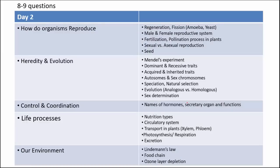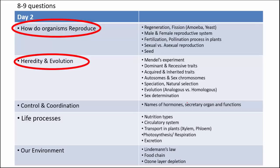The most important chapters of biology are how do organisms reproduce and heredity and evolution. These 2 chapters are very important and conceptual, so please do not go for rote learning — understand them very nicely and then revise. In the reproduction lesson, you should be aware of regeneration, fission, male and female reproductive system in humans, plant reproductive system, the process of fertilization, pollination, sexual versus asexual reproduction, and seed.